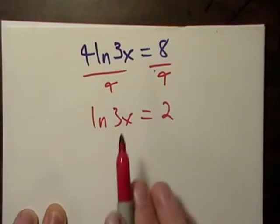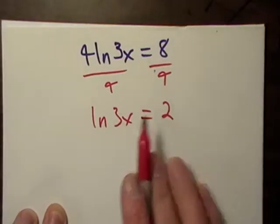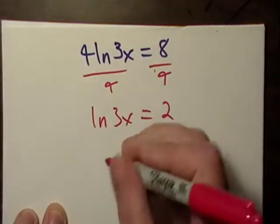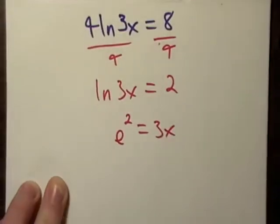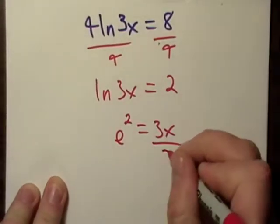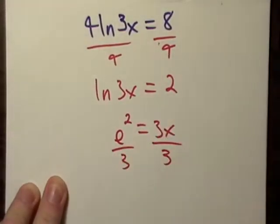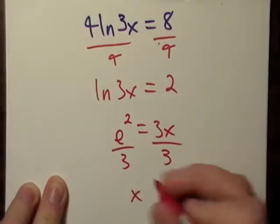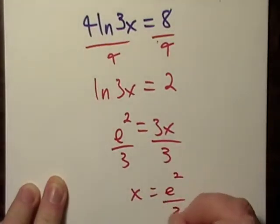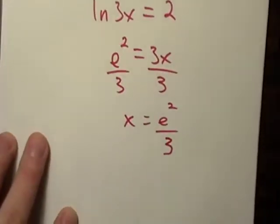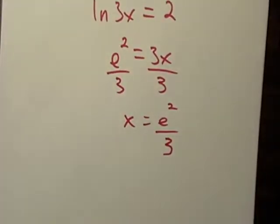Now I can say e to the 2nd power equals 3x, and then all I have to do now is just divide by 3, and I'll find out that x equals e squared over 3. So there I am right there. And that's not too hard.